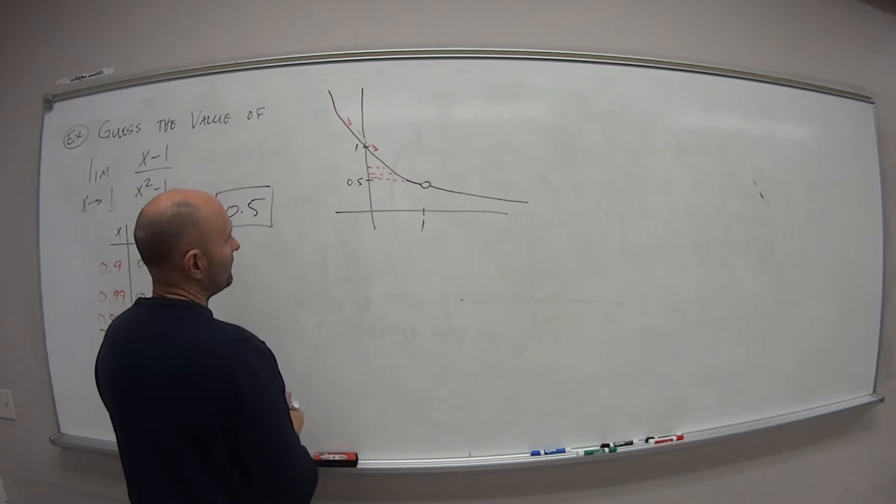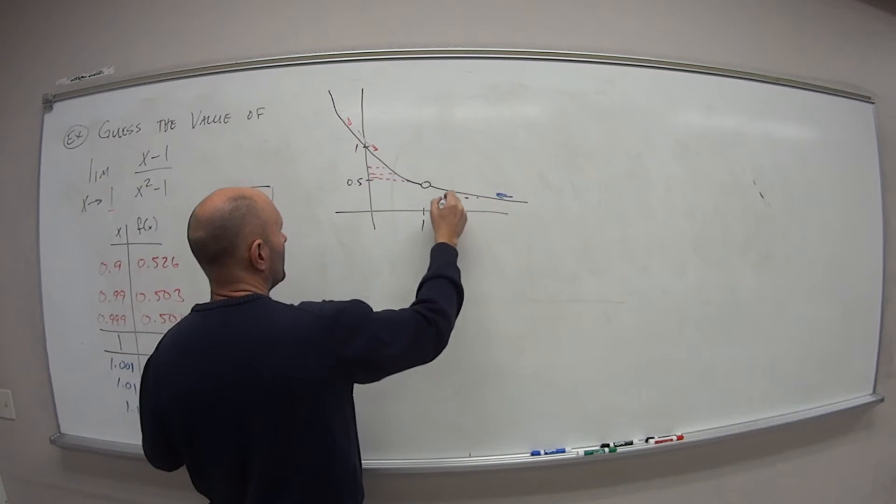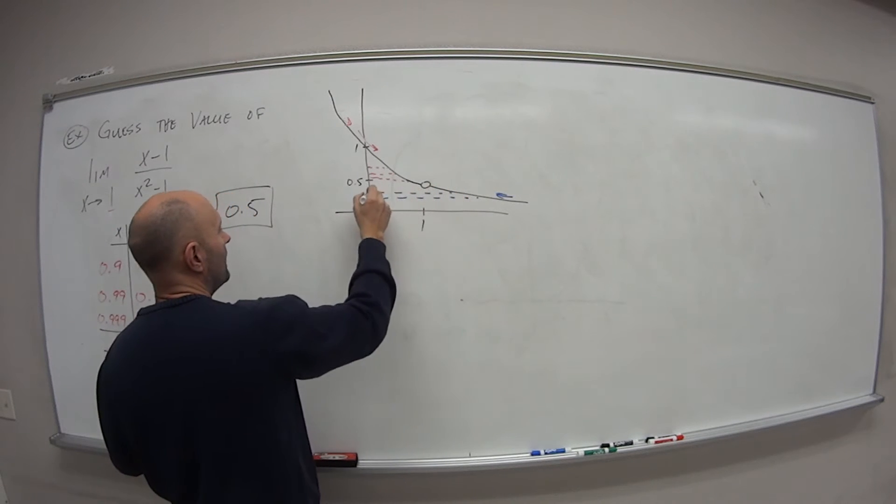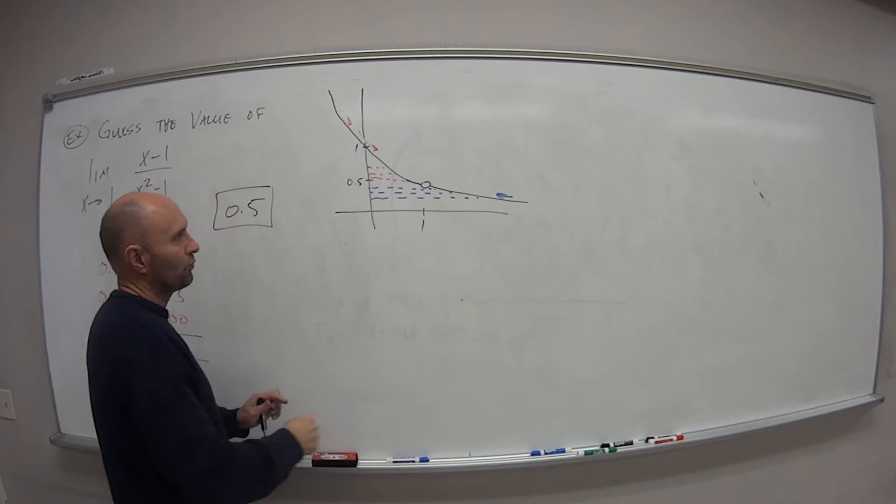From the right side, if I'm coming back towards 1 from infinity this way, what do I get? Well, I keep getting closer to 0.5. So that's what this means.